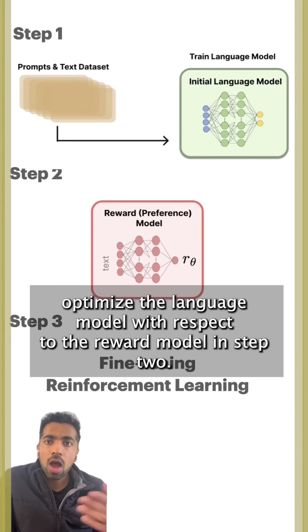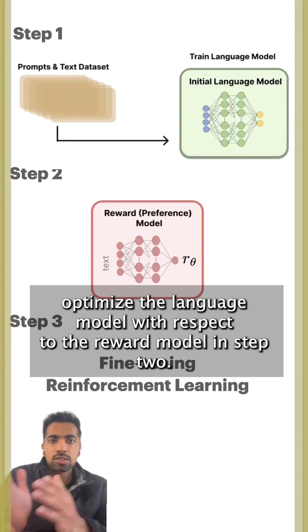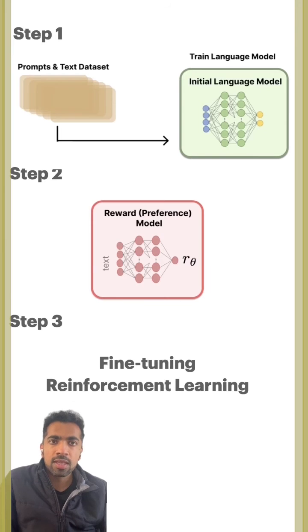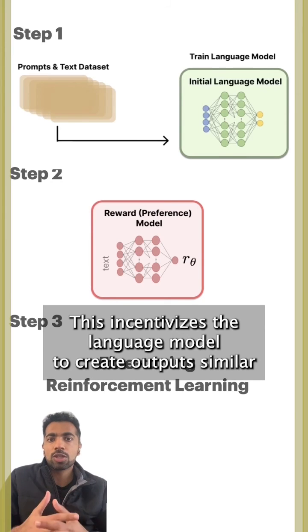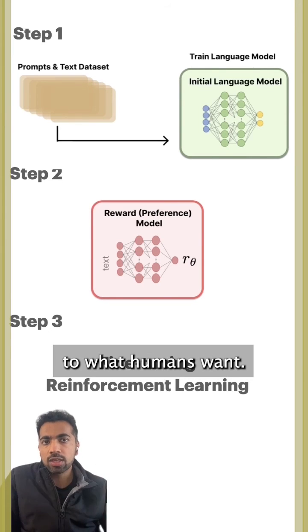The last step is to optimize the language model with respect to the reward model in step two. This incentivizes the language model to create outputs similar to what humans want.